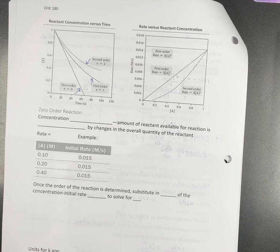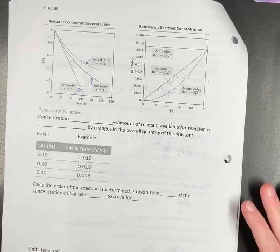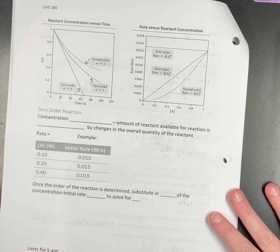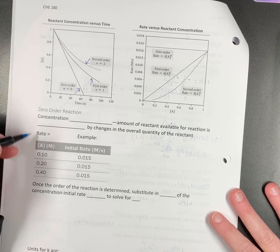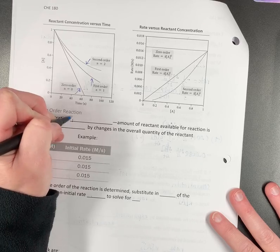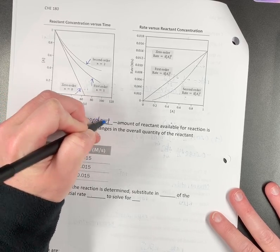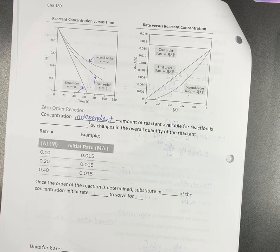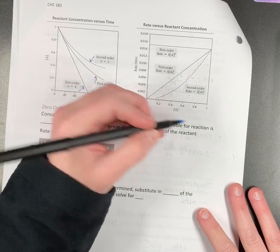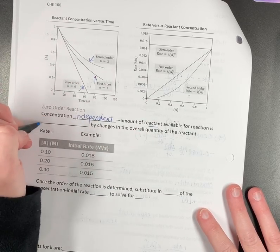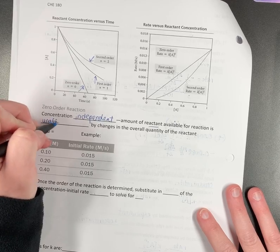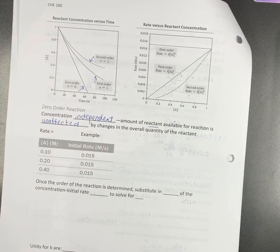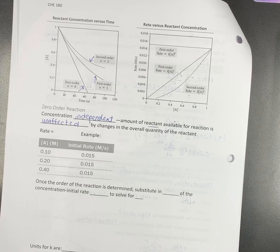Now we're going to talk about each one of these individually, what it means, things like that. So we'll start with a zero order reaction. In a zero order reaction, it is concentration independent. The amount of the reactant that is available for the reaction is actually affected by changes in the overall quantity.